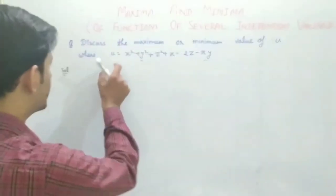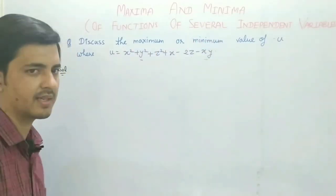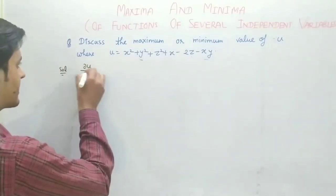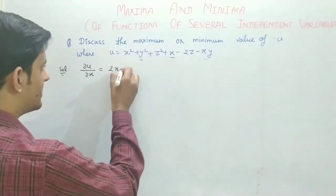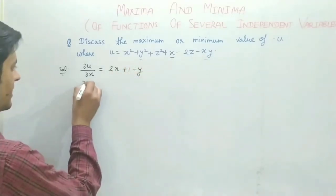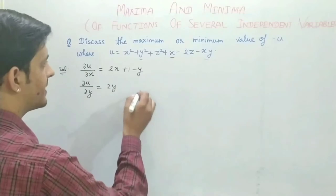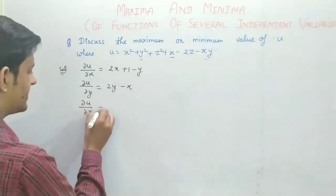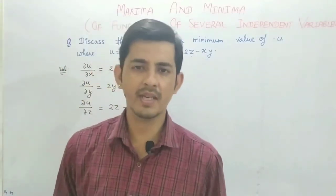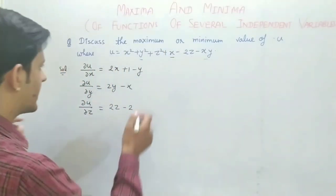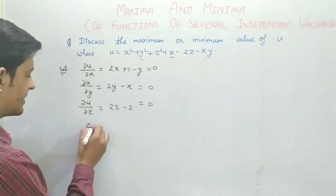Now the first numerical on maxima and minima. The function u is given as a function of x, y, z. You have to find the maximum or minimum using the steps I described. First, find del u / del x. Differentiating u with respect to x — y and z are constant — we get 2x minus y. Then del u / del y gives 2y minus x. And del u / del z gives 2z minus 2.